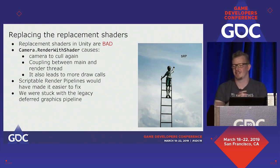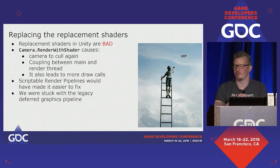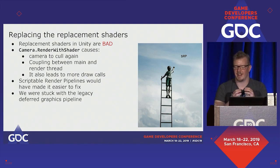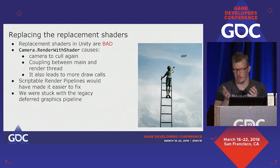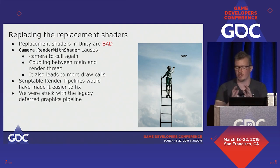Scriptable Render Pipelines was starting to get previewed during production of 11.11, and I wish we could have switched over, but it was still experimental. Originally we were generating the brush map buffer with replacement shaders, which are terrible — they cause the camera to cull again, produce more draw calls, and cause main thread coupling. With Scriptable Render Pipelines it would have been easier to fix this since the culling results would be readily available. Instead, I was stuck with the deferred renderer and a non-source-code version of Unity, requiring some creativity. What I did was steal a buffer in the G-buffer: Unity normally stores specular completely separate, but that's only constructed from a specularity value and the albedo color, so by using an unused channel to store the specularity I freed up a whole buffer for the information I needed.